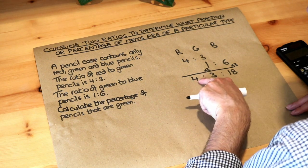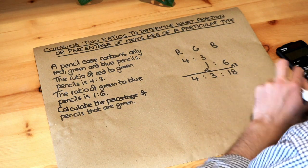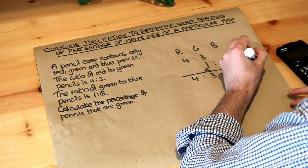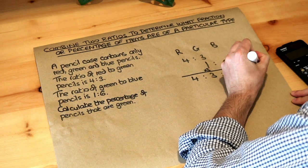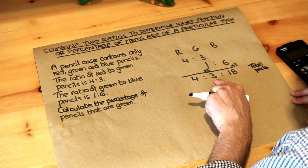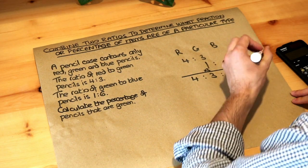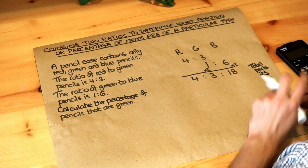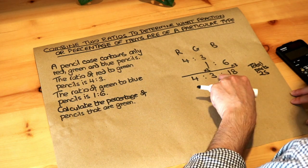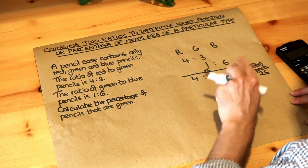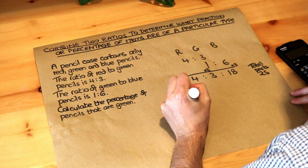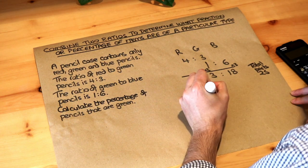Well if there's four red, three green, 18 blue, then the total parts—or the total number of pencils in this case—would be four plus three, which is seven, plus 18 is 25. So if there were 25 pencils and three of them were green, then three twenty-fifths of the pencils are green.